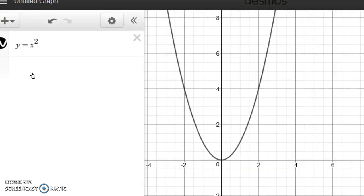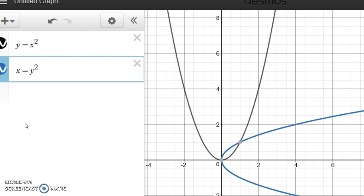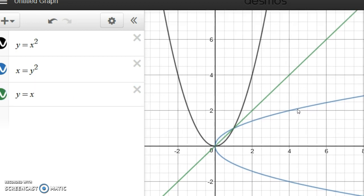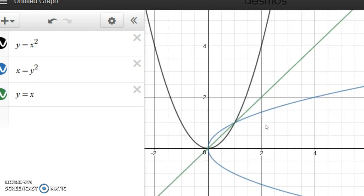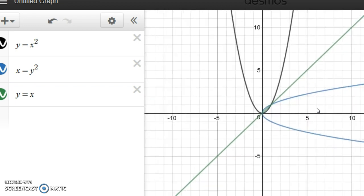Now, let's look on Desmos here. We have graphed y equals x squared, which we all know what the graph looks like. Now, what about the graph of x equals y squared? Notice it looks like this over here. And if we graph y equals x, we can see these are reflections of each other. The blue and black graphs are reflections of each other across this line y equals x.